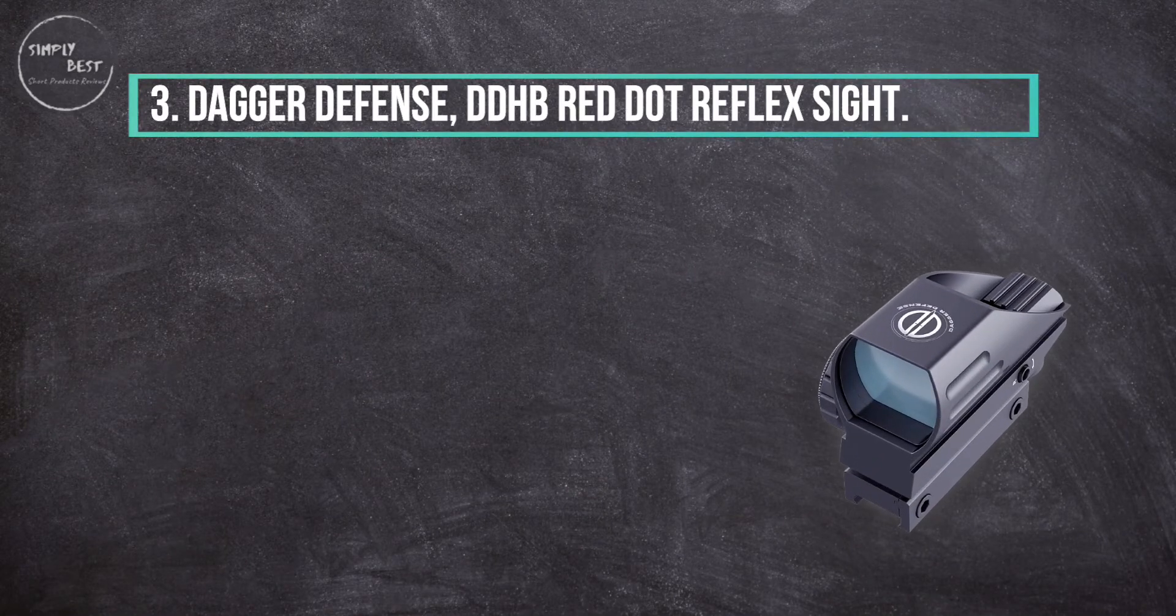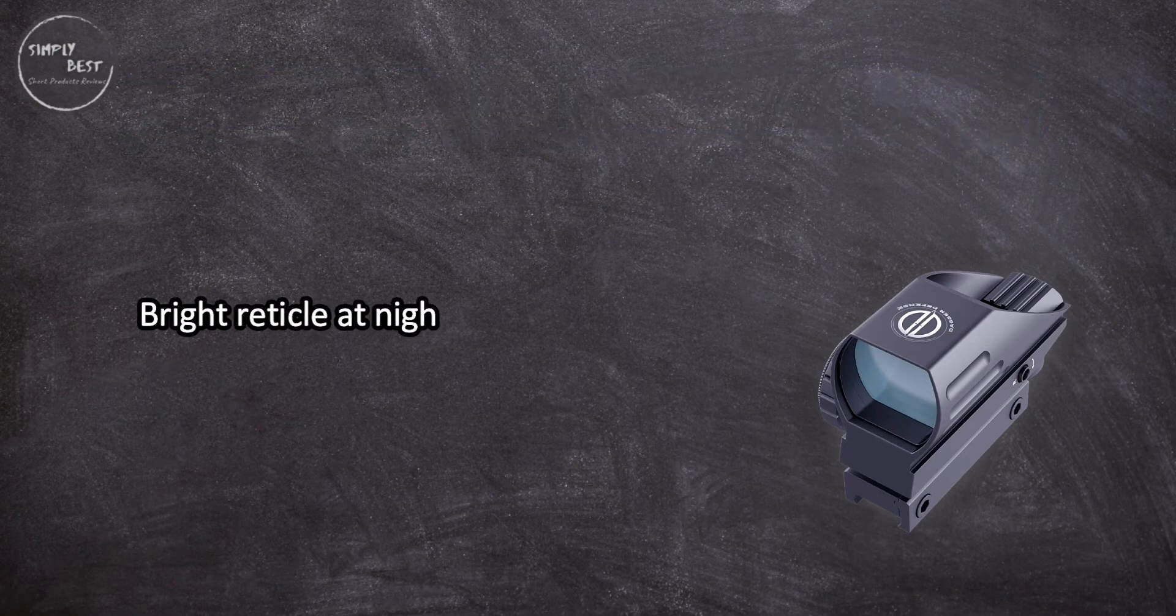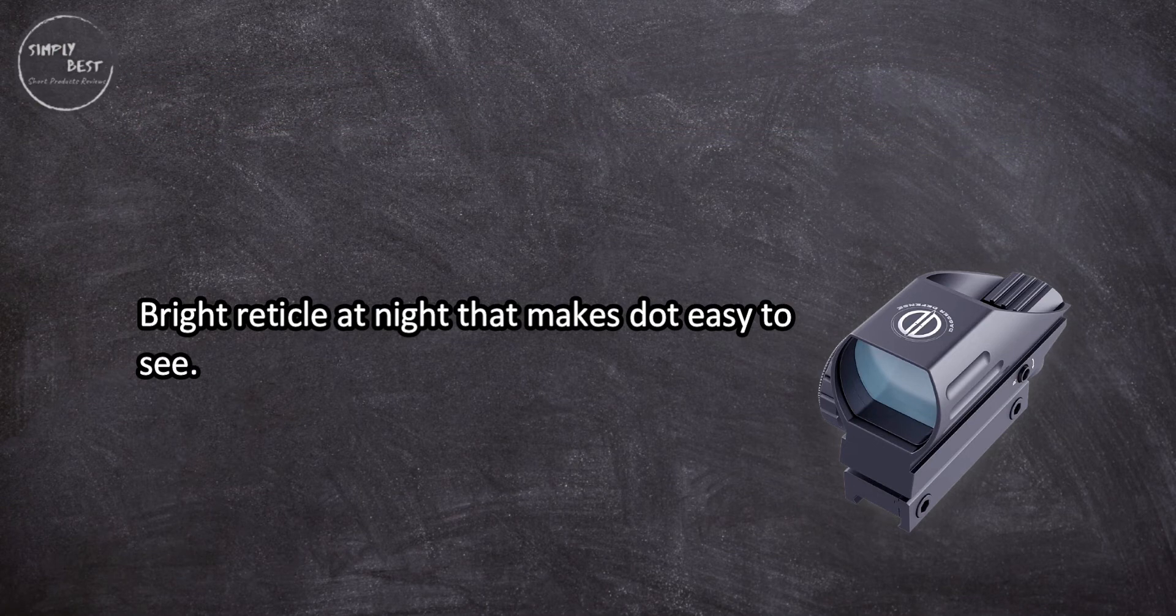At number three: Dagger Defense DDHB Red Dot Reflex Sight. Bright reticle at night that makes the dot easy to see. Choice of red or green dot color. Responsive customer service. Sturdy housing, easy to set up and zero.